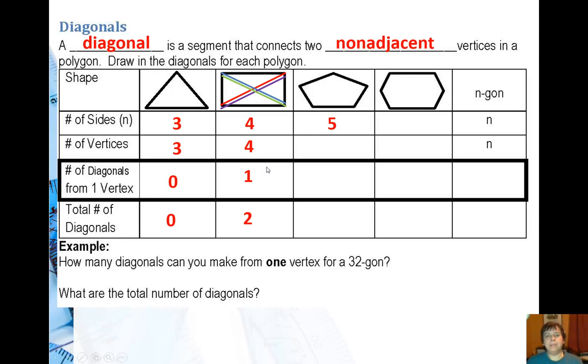Next shape is a pentagon and there are five sides and five vertices. From one vertex I can draw two diagonals. Well there are five vertices so I could go five times two, that should be ten, but they're going to overlap again so I'll end up with five because I have to divide it by two.